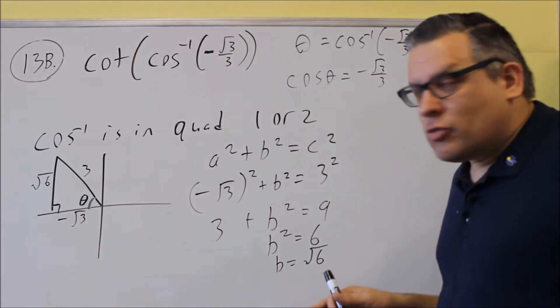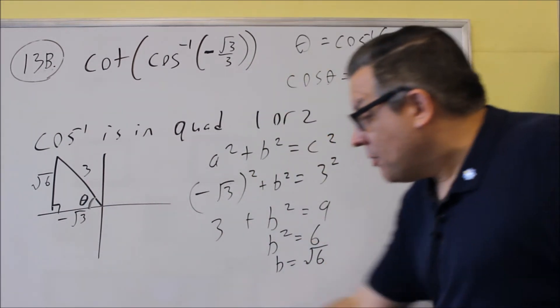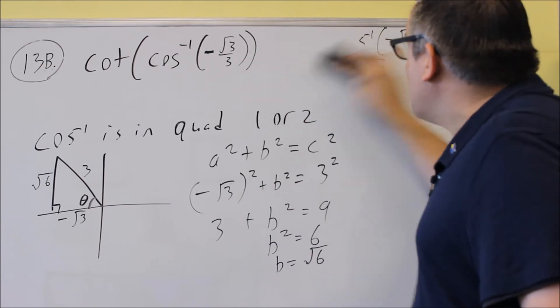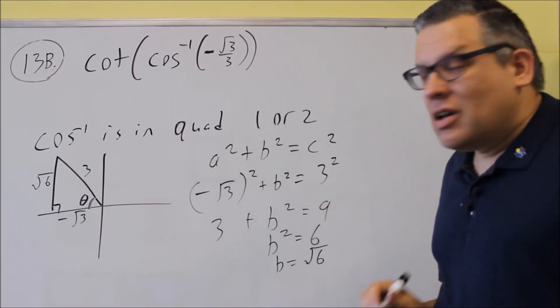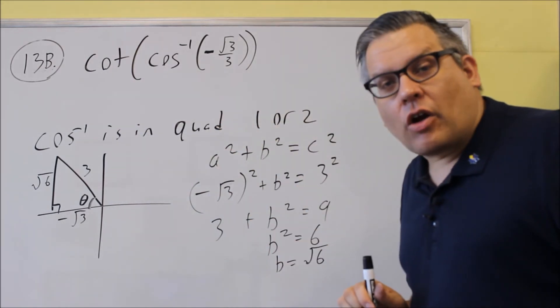Now we have all the information we need in order to do this one. We use the inside one to draw the triangle like we did here. The outside one is what we use to get our answer.